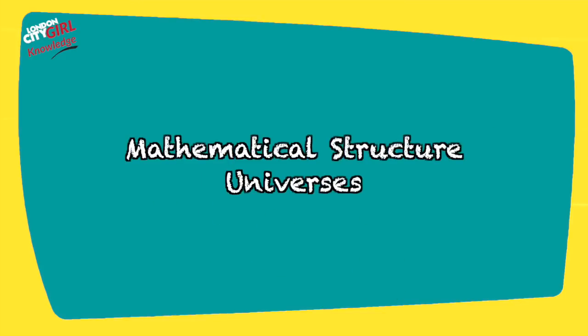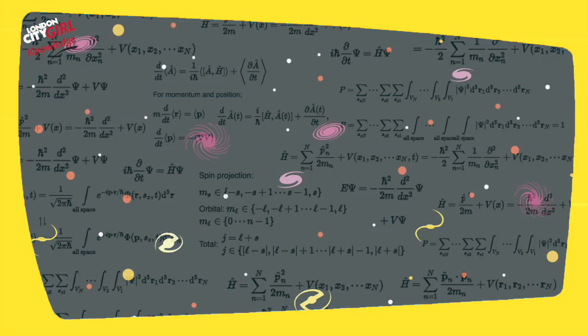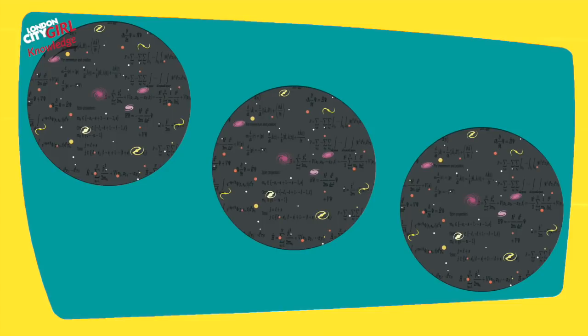Mathematical structure universes. In this theory, mathematics is seen as the fundamental reality over and above our observations of the universe. Rather than mathematics being a tool which we use to describe our universe, it is the universe. And the particular mathematical structure that makes up our universe isn't the only option. In fact, all possible mathematical structures exist as their own separate universes.